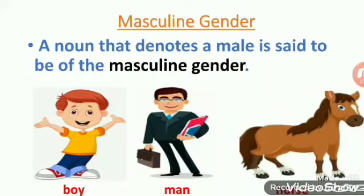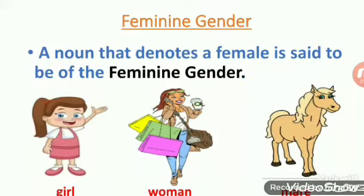On the other hand, a noun that denotes a female is said to be of the feminine gender. For example, girl, woman, mare, and such like.